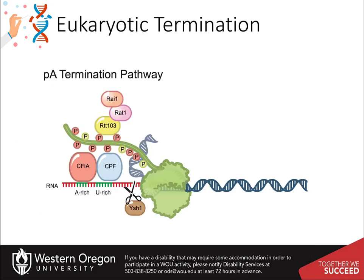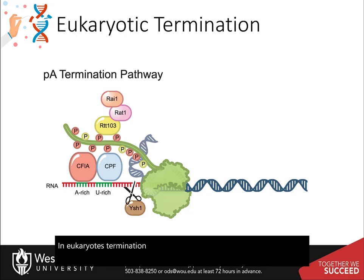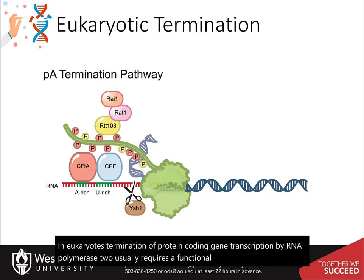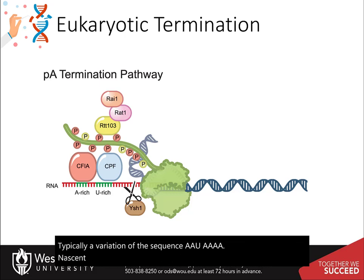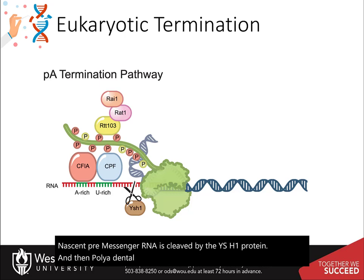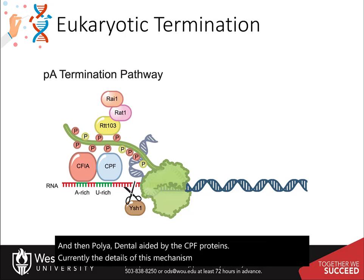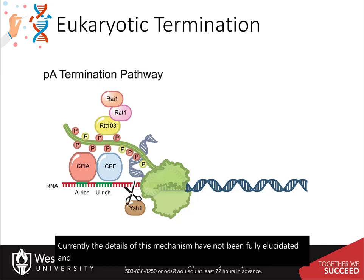In eukaryotes, termination of protein-coding gene transcription by RNA polymerase II usually requires a functional polyadenylation signal. Typically, a variation of the sequence AAUAAA in the nascent pre-messenger RNA is cleaved by the YSH1 protein and then polyadenylated by the CPF proteins. Currently, the details of this mechanism have not been fully elucidated and multiple models have been postulated. You can read more about these models in Chapter 10.